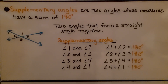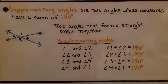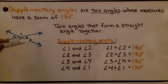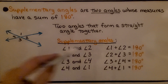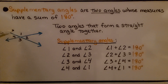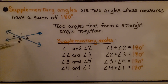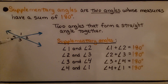Supplementary angles are two angles whose measures have a sum of 180 degrees — two angles that form a straight angle together. Angles 1 and 2 are supplementary: angle 1 plus angle 2 equals 180 degrees. Angles 2 and 3 are supplementary, so they add up to 180 degrees. And angle 3 and angle 4 together equal 180 degrees, as do angle 4 and angle 1.